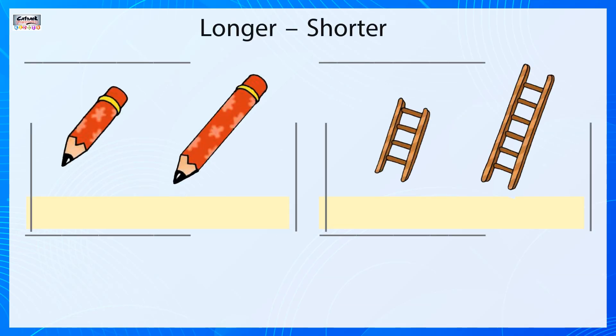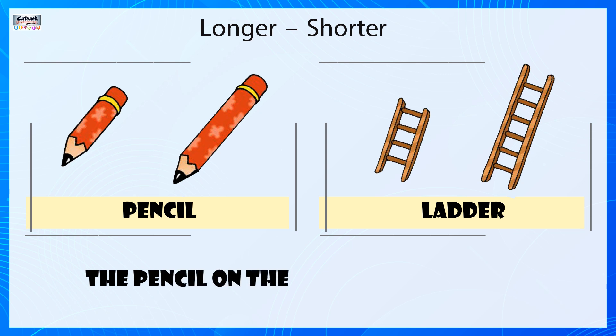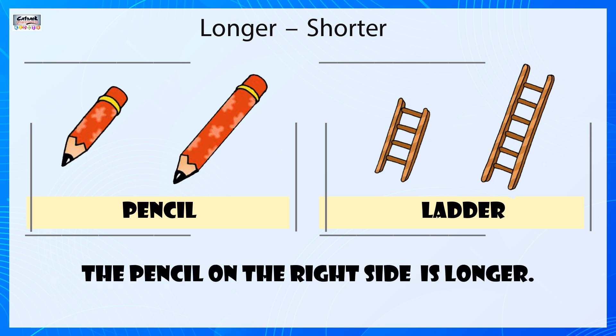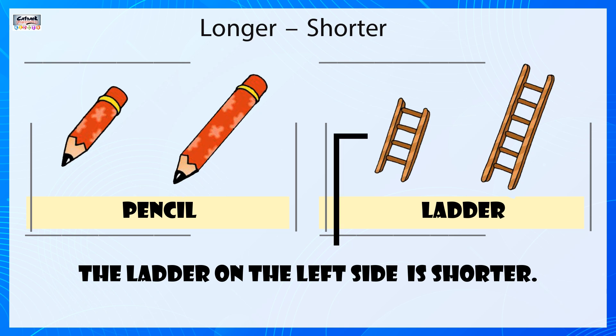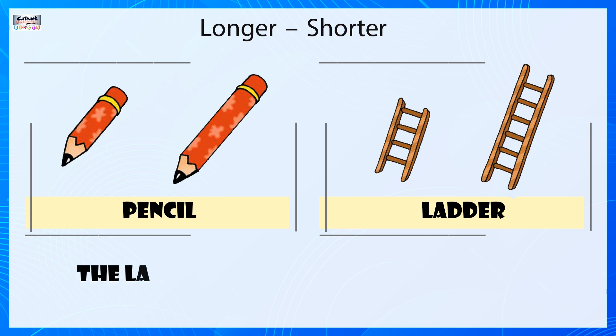Longer, Shorter. The pencil on the left is shorter. The pencil on the right is longer. The ladder on the left is shorter. The ladder on the right is longer.